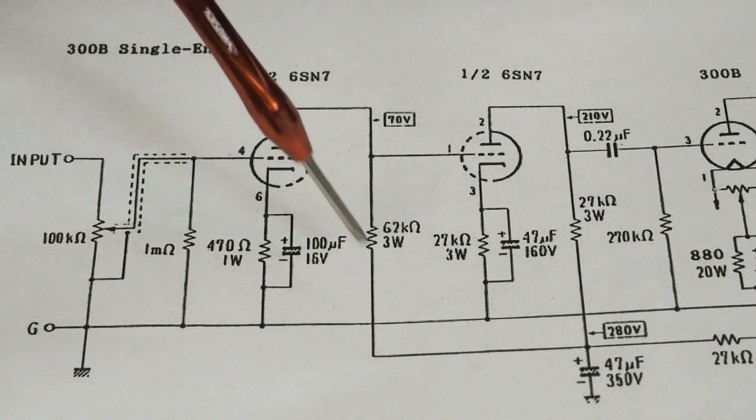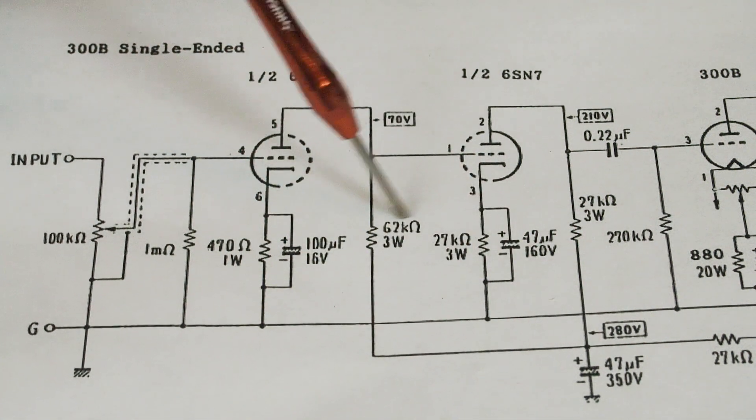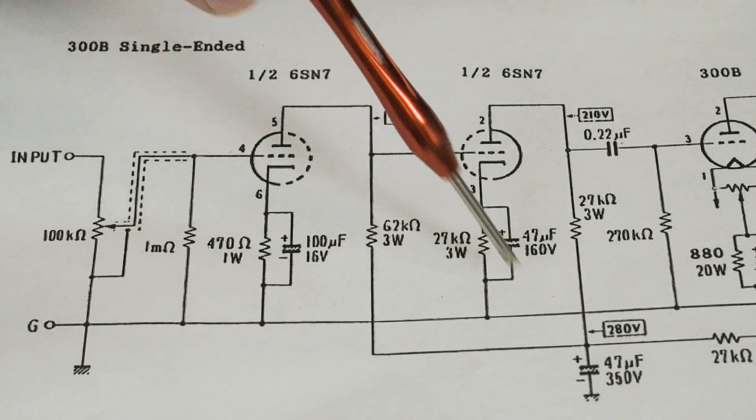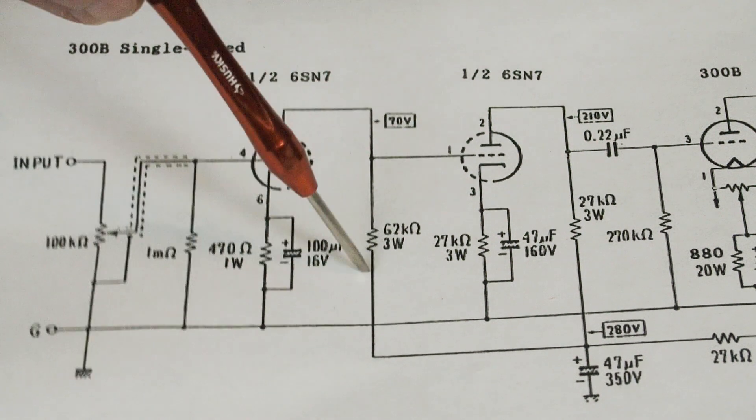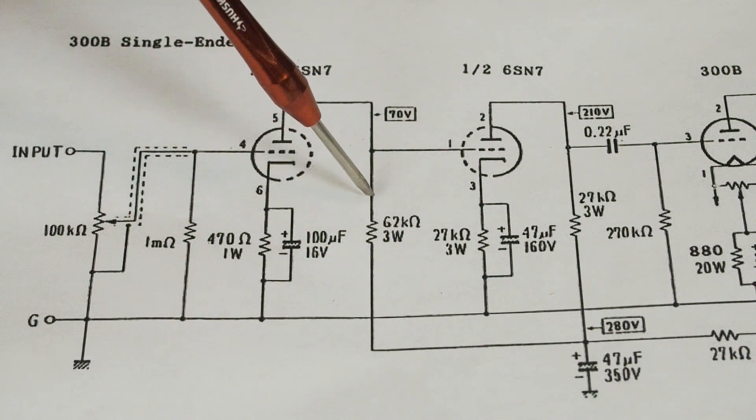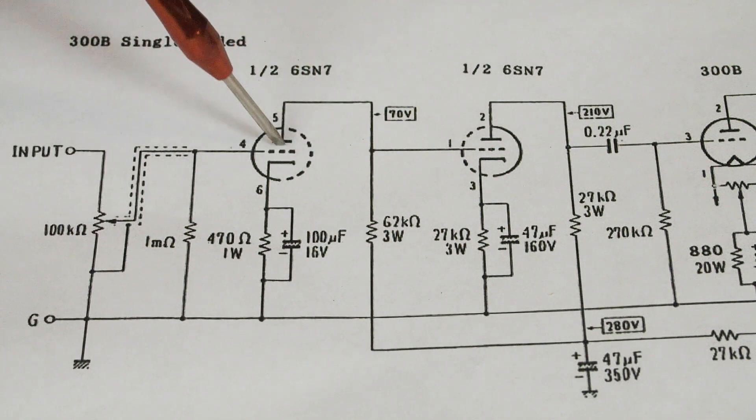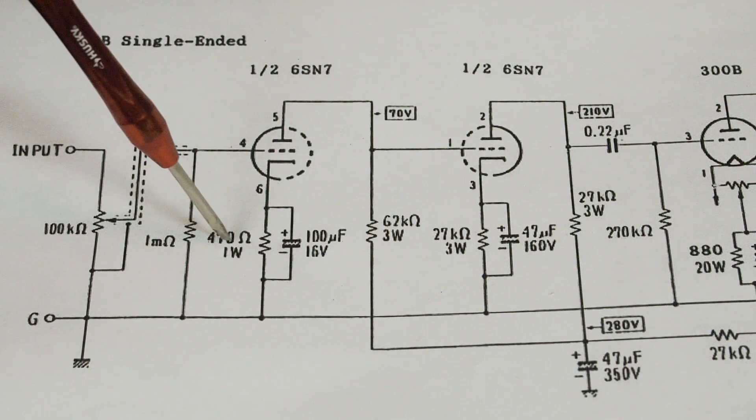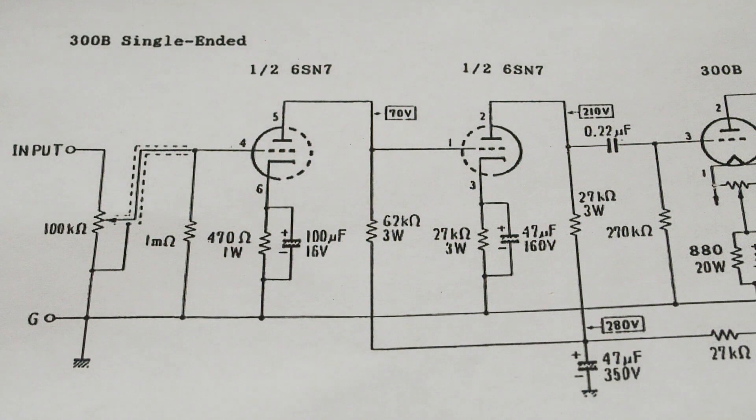The next is the B plus comes in here, goes through the 62k three watt resistor. We drop from 280 to 170 volts, which is 210 volt drop across this plate load resistor. Then the current goes across this tube and it's grounded through this 470 ohm. I use three watt resistors through the whole amp just to be consistent. They're about the same price, they're a little bigger. I also use metal film resistors. Some people swear by carbon comp or carbon film. I like metal film resistors. They're quiet, they're consistent, they're really close to the ohms that they're rated at, and they stay at that ohms. And so highly recommend going with metal film resistors.